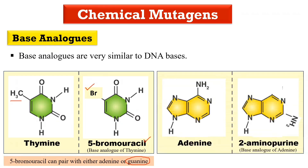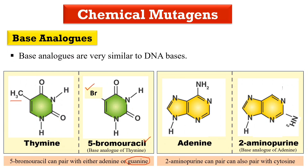Similarly, 2-aminopurine is the base analog of adenine. The difference between adenine and 2-aminopurine is that in 2-aminopurine there is an addition of an amino group at the second position. Due to this, 2-aminopurine can incorporate inside the DNA and base pair with cytosine. This base pairing with cytosine causes an error during replication, ultimately resulting in the creation of a mutation.